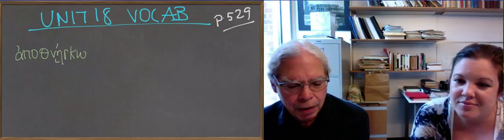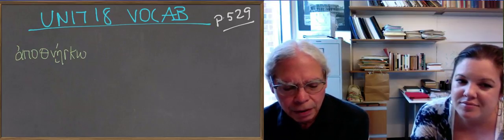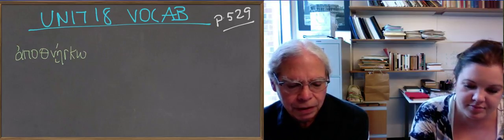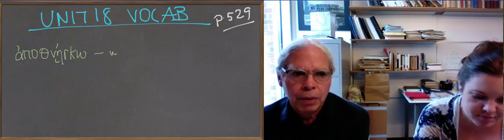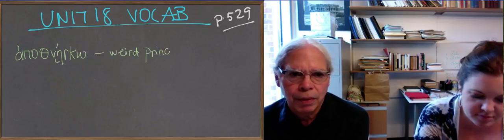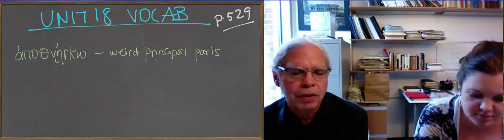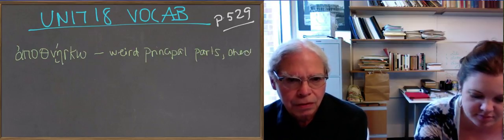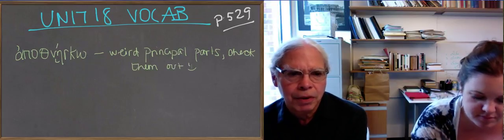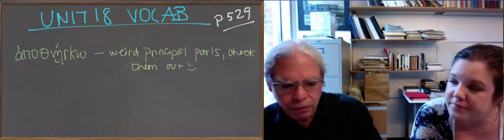The tricky part about apothnesko is its principal parts. The future is apothanumai, and then you have a second aorist apethanon, and then a perfect tethneka. Sometimes it has athematic forms.